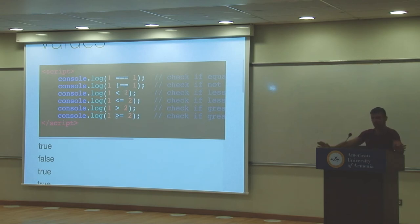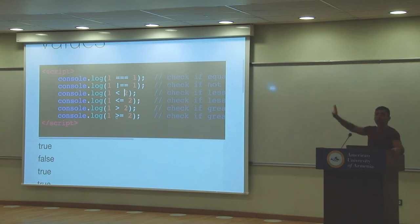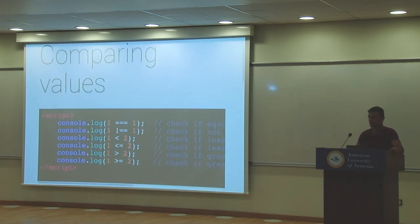If we write three equal signs (===), it also checks the type of the two values. With two equal signs (==), a string and an integer might be considered equal due to type coercion — which is why we don't use double equals. Just use triple equals for equality and !== for not-equal. Don't worry about double equals for now — come to office hours if you're curious.